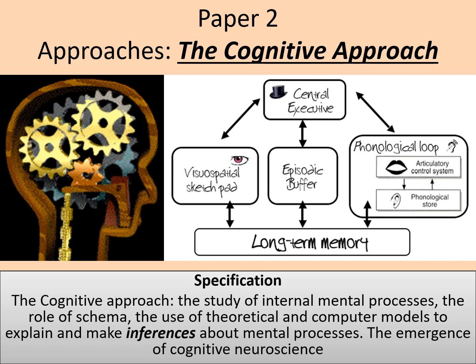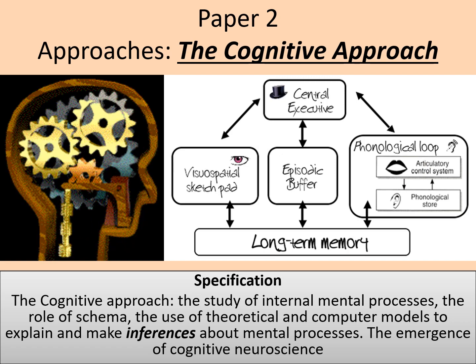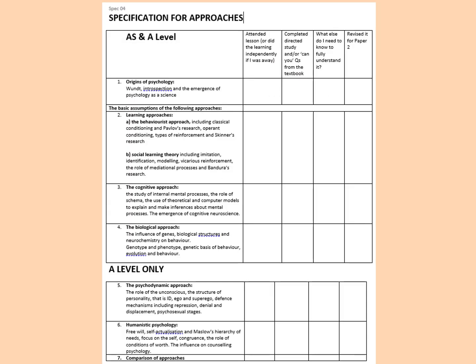This lesson is on the cognitive approach for A-level psychology, and it's number three on the specification for the approaches unit. You've already done number one, origins of psychology; number two, the learning theories, which are the behaviourist and social learning theory. And this is number three on the spec: the cognitive approach.